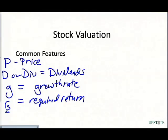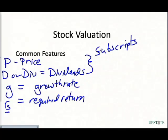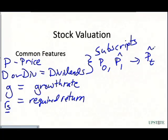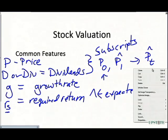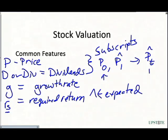Now P and D are going to be given some subscripts. We'll see P sub zero, P sub one, and all the way out to P sub T — and we'll put a hat on top of these. P sub zero means the price today — what we're looking at in the market. P-hat sub one means in one time period, in one year, what is our expected price going to be? When we see a hat, that means expected. So P-hat sub T is our expected price in time period T, defined at the end of the term.